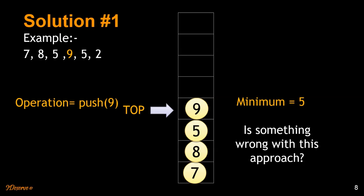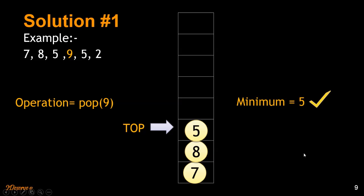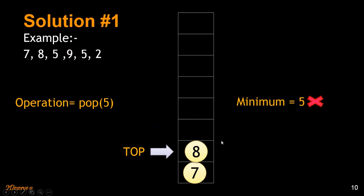Is there something wrong with this approach? I think there is. Let's try to pop out elements and see. We pop out 9 — we have a stack of 5, 8, 7 and the minimum is 5, which is correct. Now let's pop out 5 — the stack contains only 7 and 8, but the minimum is still showing 5, which is wrong.